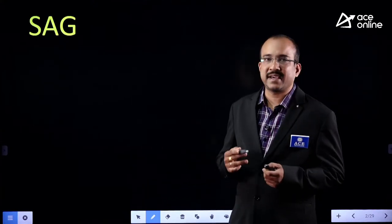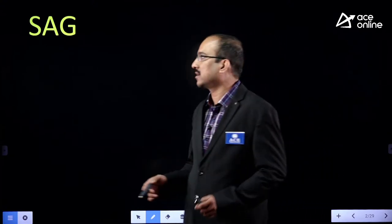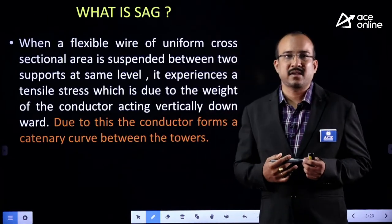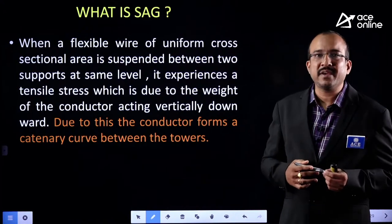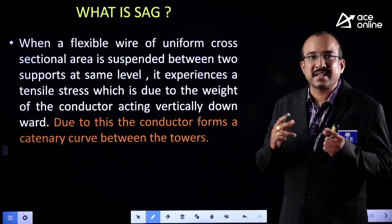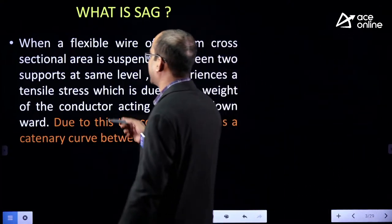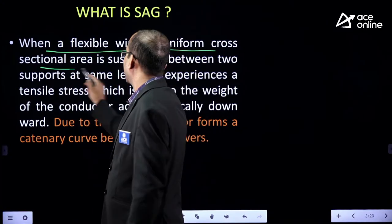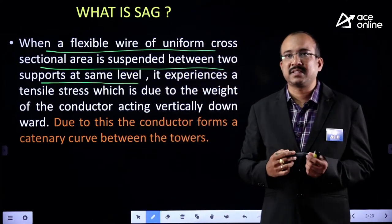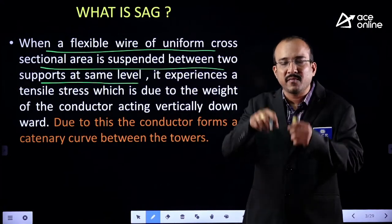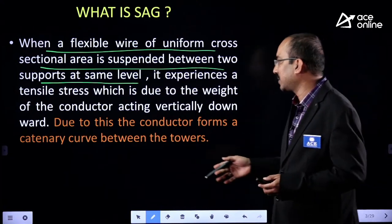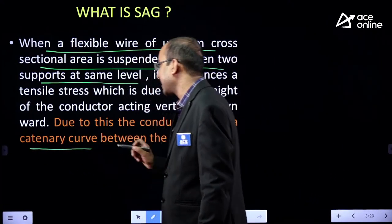Today, let us try to analyze about SAG. What do you mean by SAG? Whenever a flexible wire of uniform cross-sectional area is suspended between two supports at the same level, it will experience tensile stress. Due to the weight of the conductor, it will be in the downward direction. So it will take what form? It will take a catenary curve.